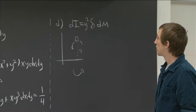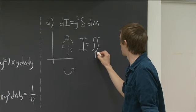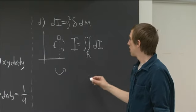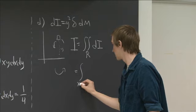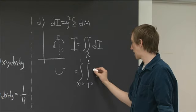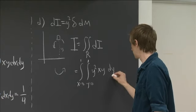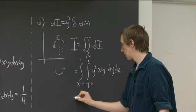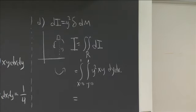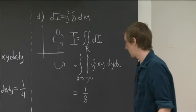And so that tells us that the total inertia about the x-axis is just the integral of di. And so we get the integral from x equals 0 to 1, integral y equals 0 to 1, and then we just have y squared x, y, dy, dx. And this again we could compute. We find that it's 1 eighth.